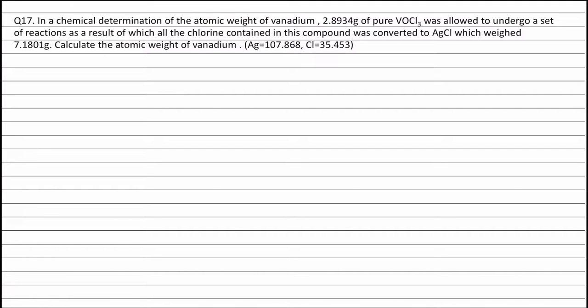Calculate the atomic weight of vanadium. Atomic weight of silver is 107.868 and atomic weight of chlorine is 35.453.